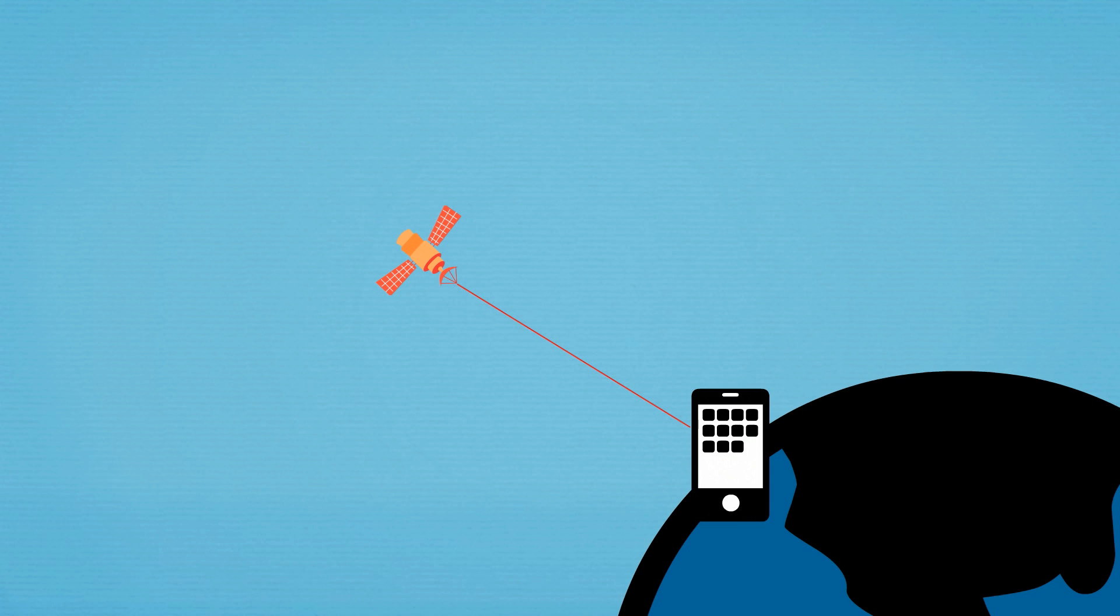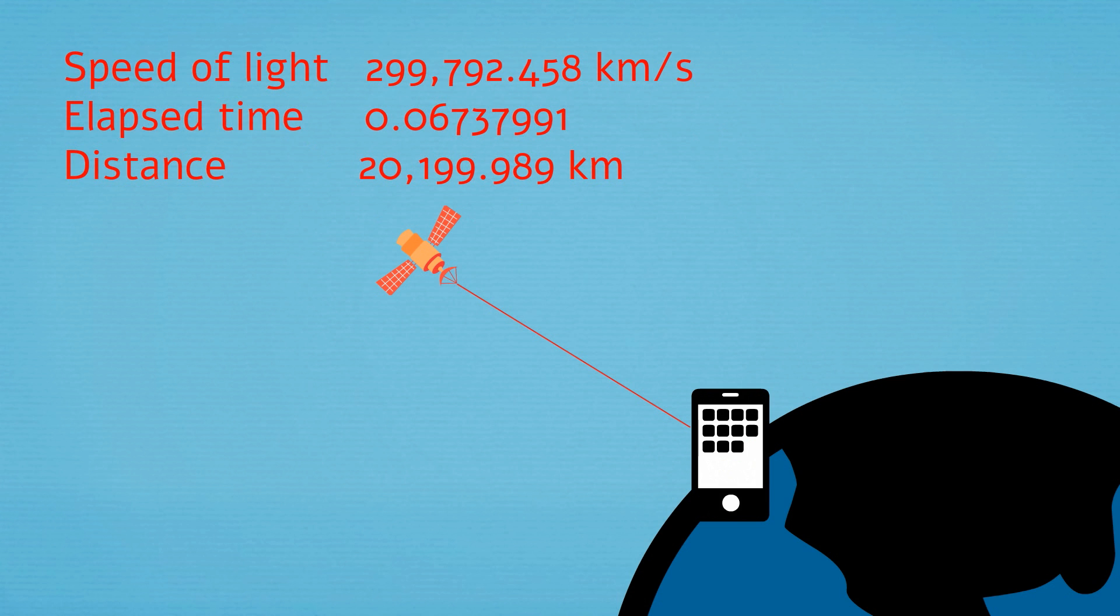Your GPS receives a signal and knows that the signal travelled at the speed of light, so it can work out how far it is from the point in space where the satellite was when it sent out the message.